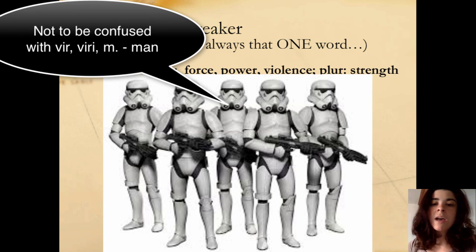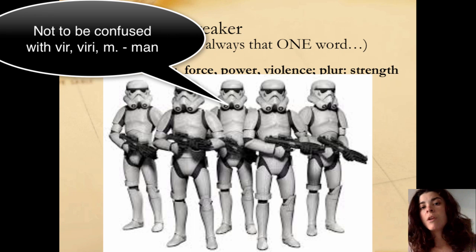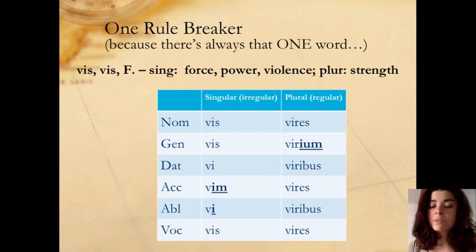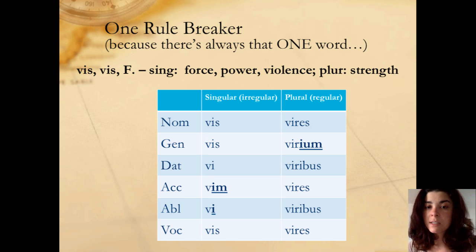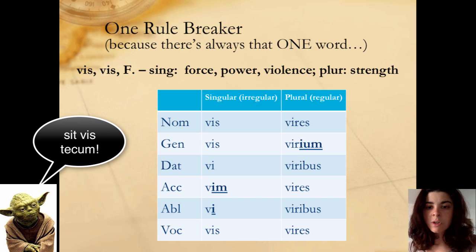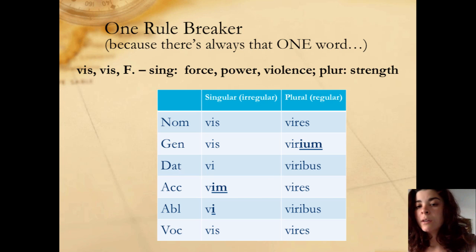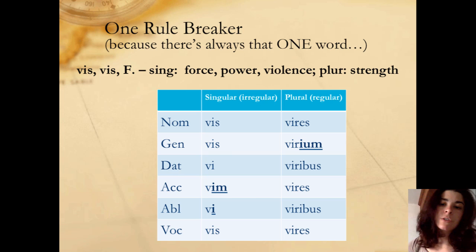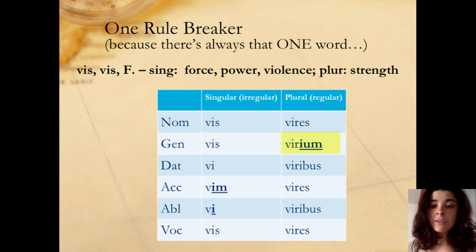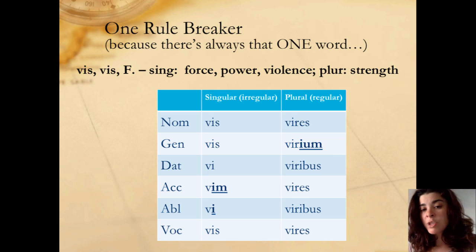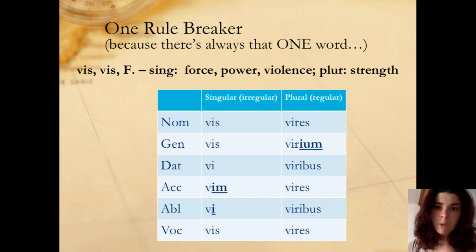Now you might be wondering how you'll tell the difference between VIS, VIS and vir. Remember, vir, meaning man, is actually a second declension noun, not third declension. So it's going to be really important to pay attention to which declension the noun is in to tell the difference between them. VIS being a third declension word will be easier to distinguish when you're talking about men versus strength. The genitive plural is the secondary exception — VIRIUM — but other than the stem changing, the endings are the same as you're used to.